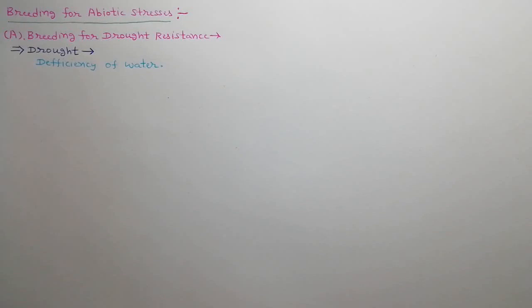In this lecture we will discuss about the breeding for abiotic stresses. First of all we will discuss about the breeding for drought resistance. Drought is a condition of deficiency of water during the life period of a crop, which prevents the complete expression of the genetic ability of a crop. As a result, the yield of the crop gets decreased.